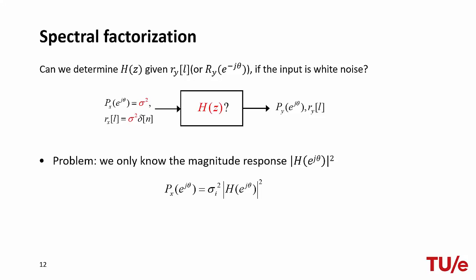The problem is that when we have the output power spectral density, we can only obtain the magnitude response of the system. We can, in fact, use the input-output relationships for LTI with random inputs to obtain the formula as in the slide. However, in general, there are multiple systems that have the same magnitude response, so this is not sufficient to uniquely identify our system.